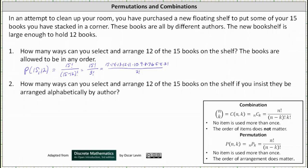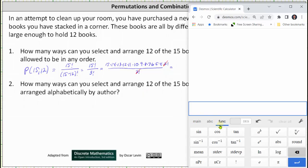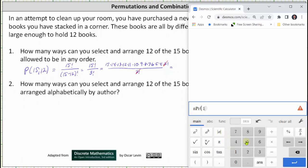3 factorial divided by itself simplifies to 1. And now we'll go to the calculator. Let's check this two ways. Let's first enter 15 permute 12 by clicking functions, the permutation function, then 15 comma 12, enter.